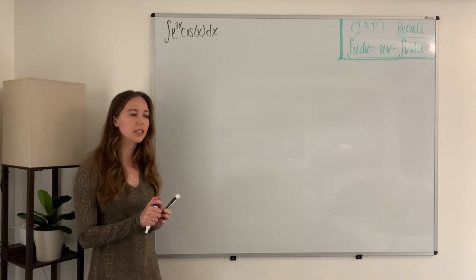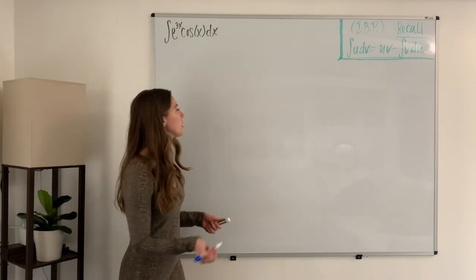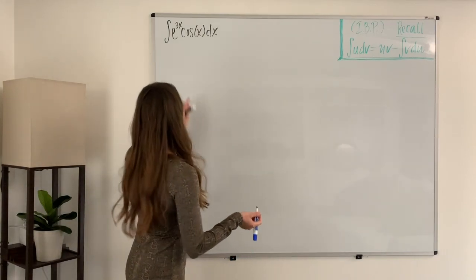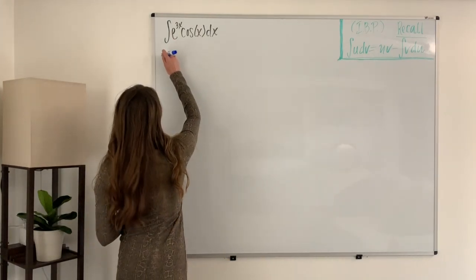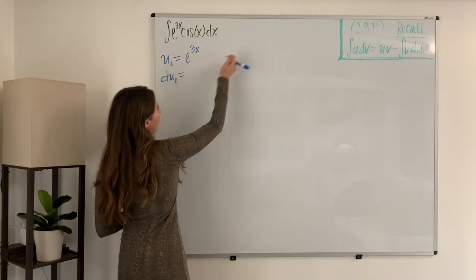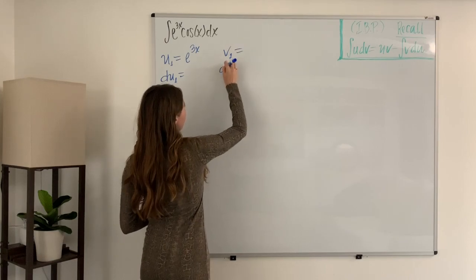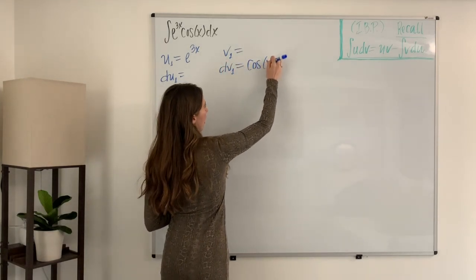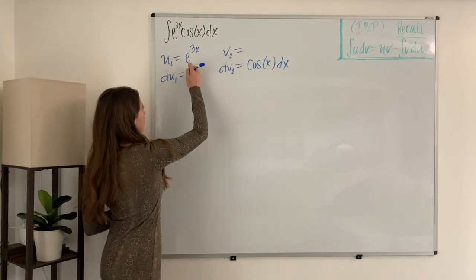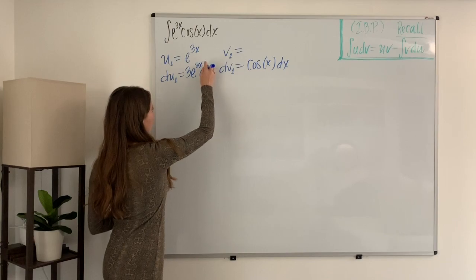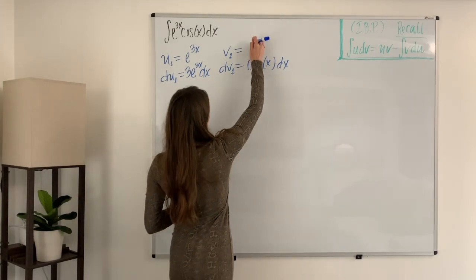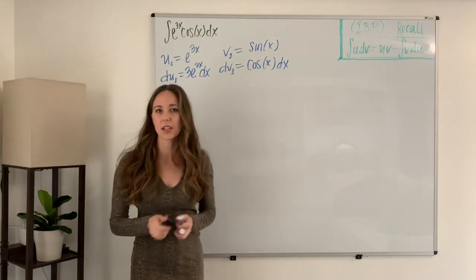Since both of these functions have non-terminating derivatives, it doesn't matter so much which one you pick for u and which one you pick for dv. For this one, I'm going to pick e to the 3x for my u, and we're going to have to find du for that. For my dv, that leaves cosine of x dx. To find du, we just take the derivative of e to the 3x, which is 3e to the 3x dx. And to find v, we take the integral of cosine of x dx, which is just going to be sine of x.